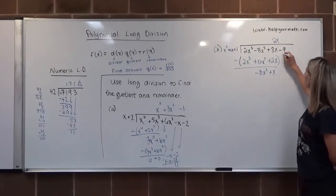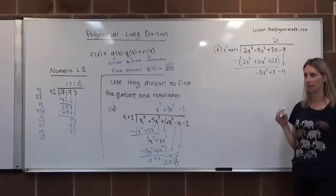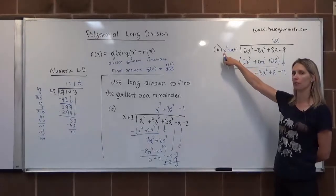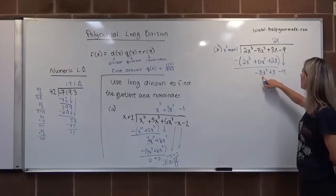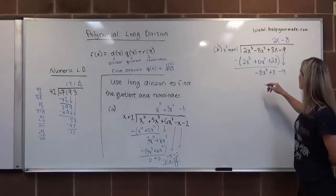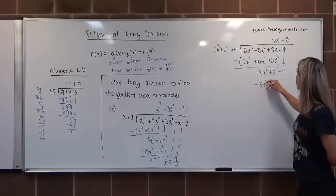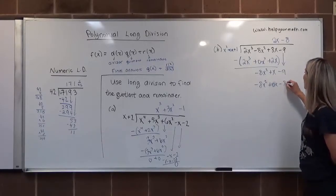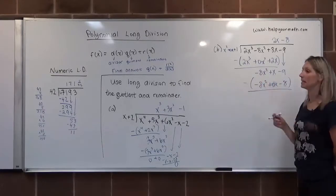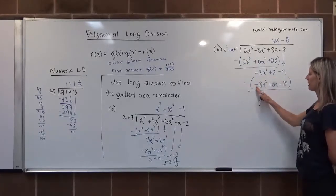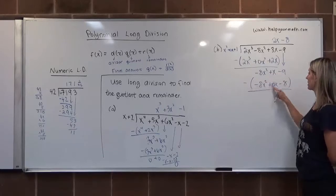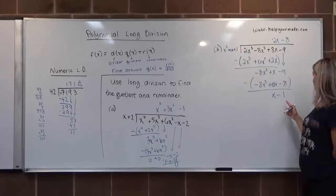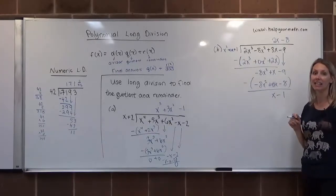We bring down the next term, -9. We take -8x² and divide it by x² — the leading term of the divisor — to get -8. So minus 8 is our next quotient term. We multiply -8 by x²+0x+1 to get -8x²+0x-8, and subtract. The -8x² terms cancel, x minus 0x stays x, and -9 minus (-8) gives -1. We've run out of terms, so we're left with a remainder of x-1.